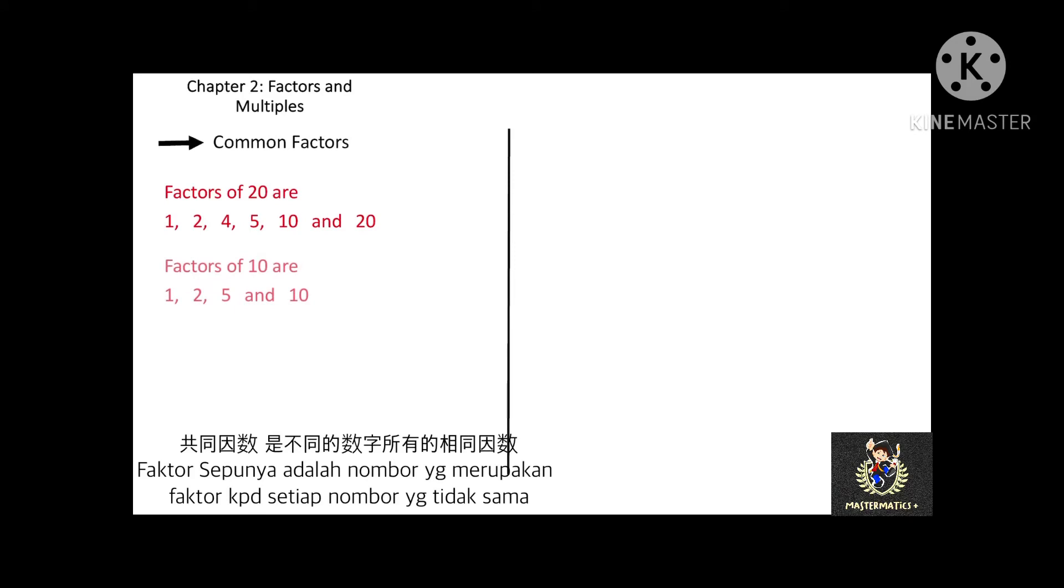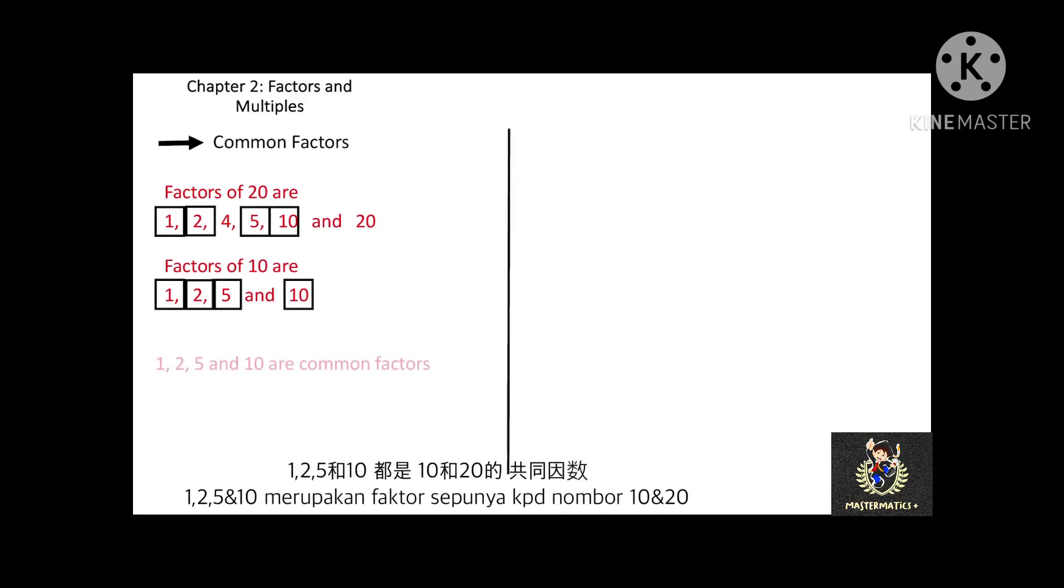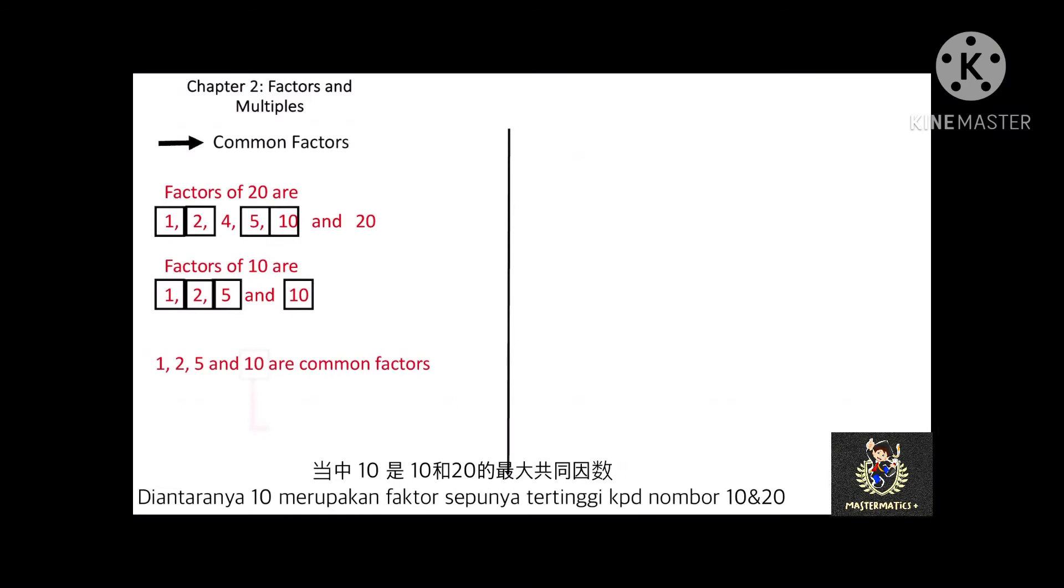If a number is a factor of 2 or more numbers, then it is called common factors of those numbers. For example, factors of 20 are 1, 2, 4, 5, 10, and 20. And factors of 10 are 1, 2, 5, and 10. See, 1, 2, 5, and 10 are the factors of both 10 and 20. Therefore, these are common factors of 10 and 20. Of all these common factors, 10 is the highest common factors of 10 and 20.